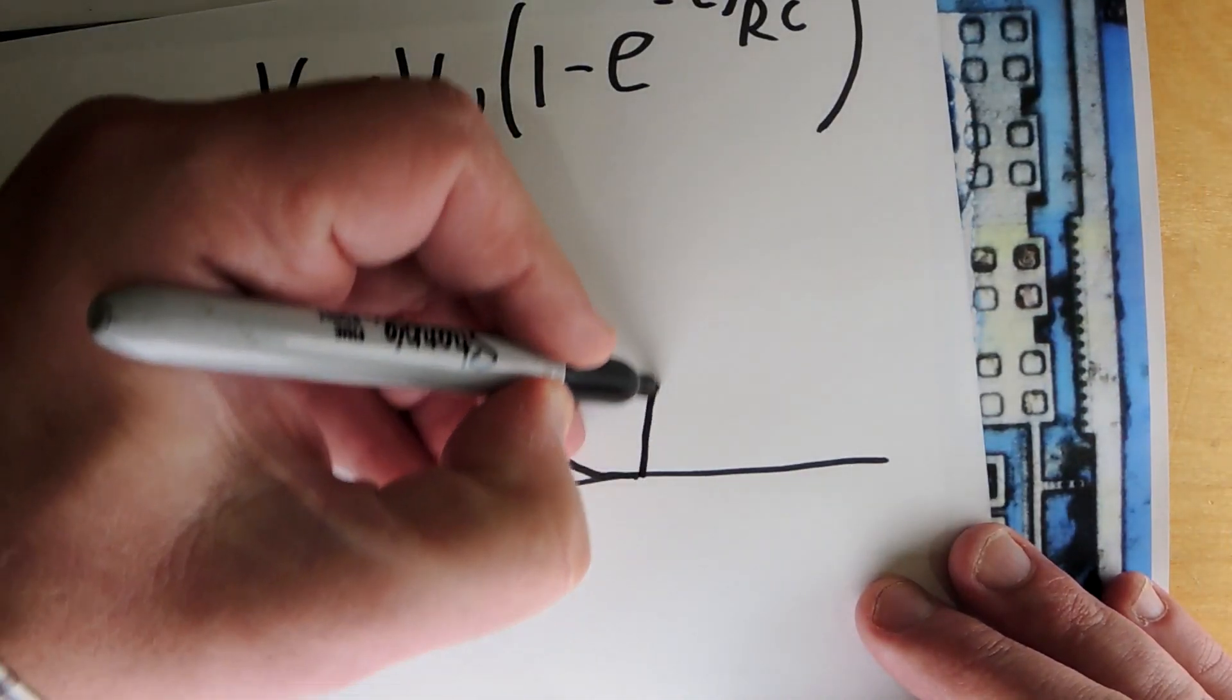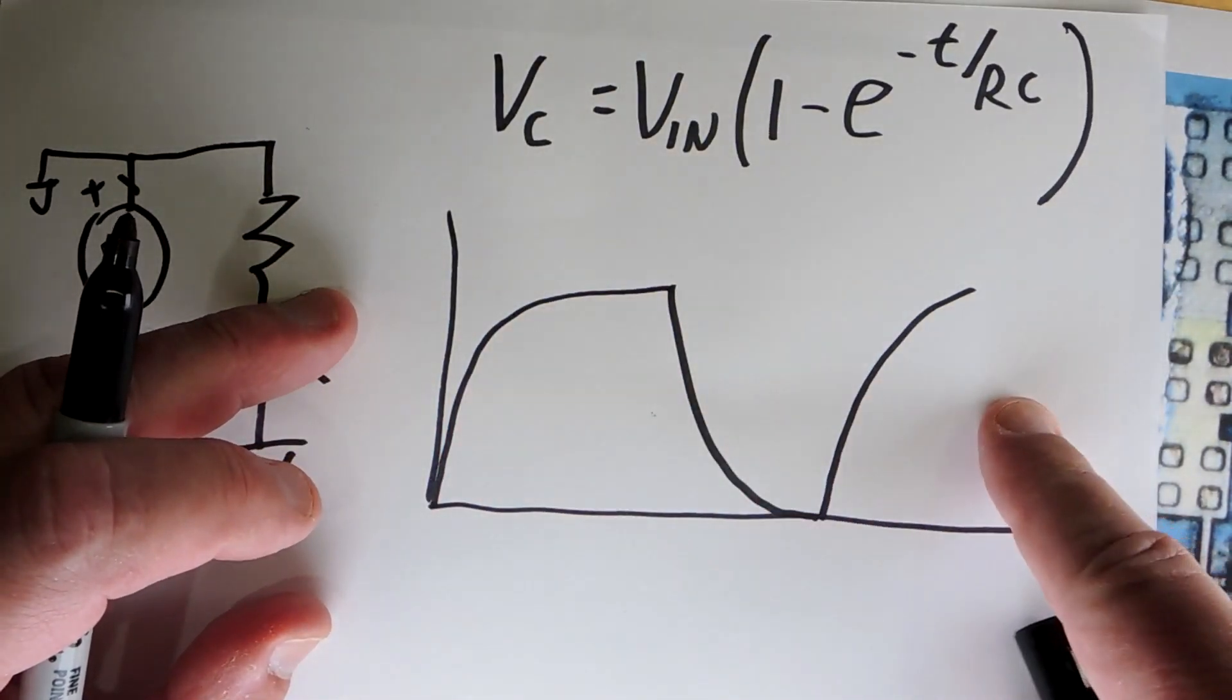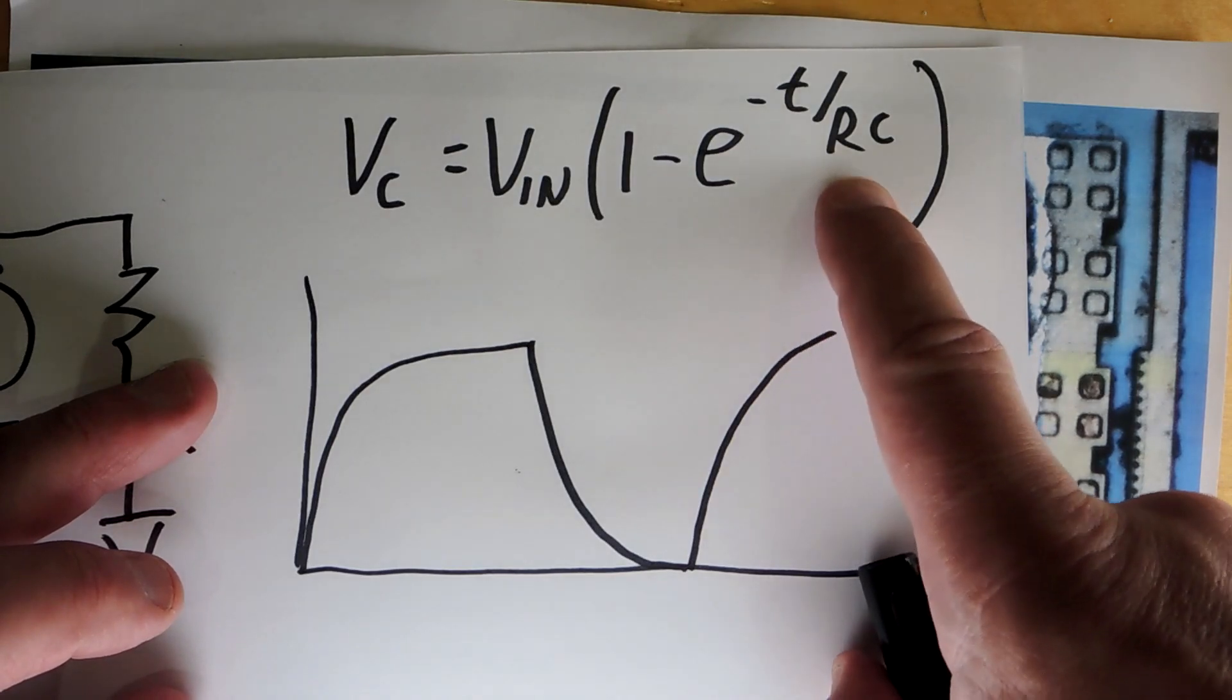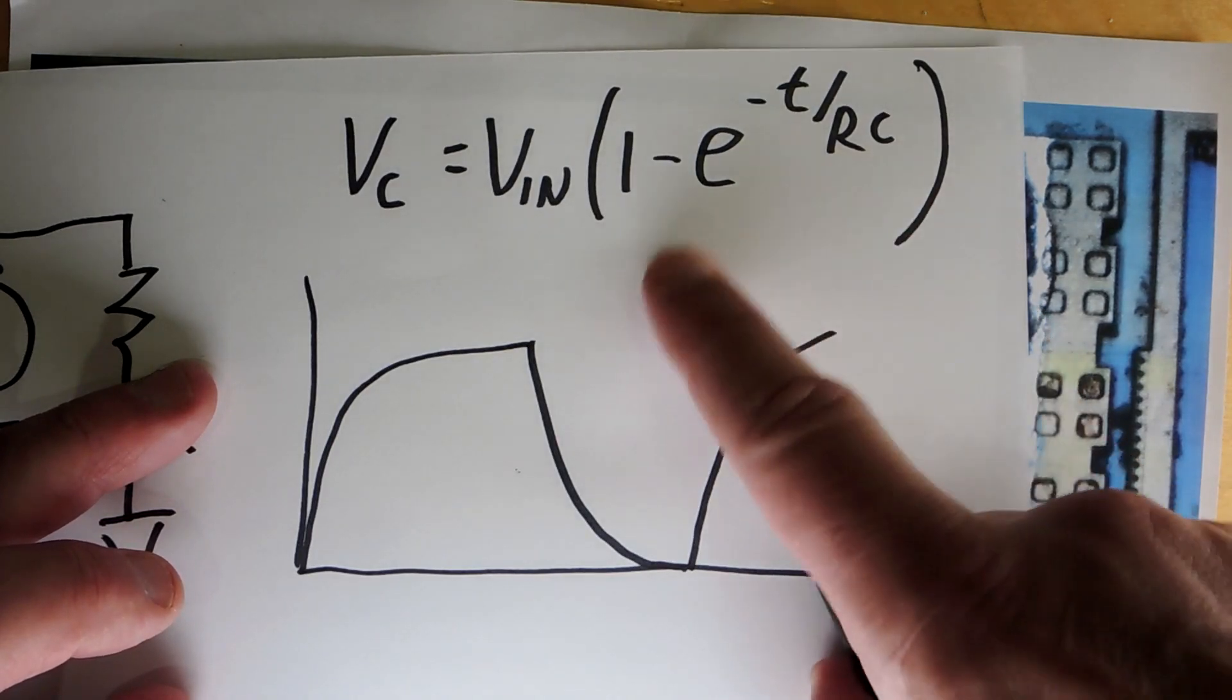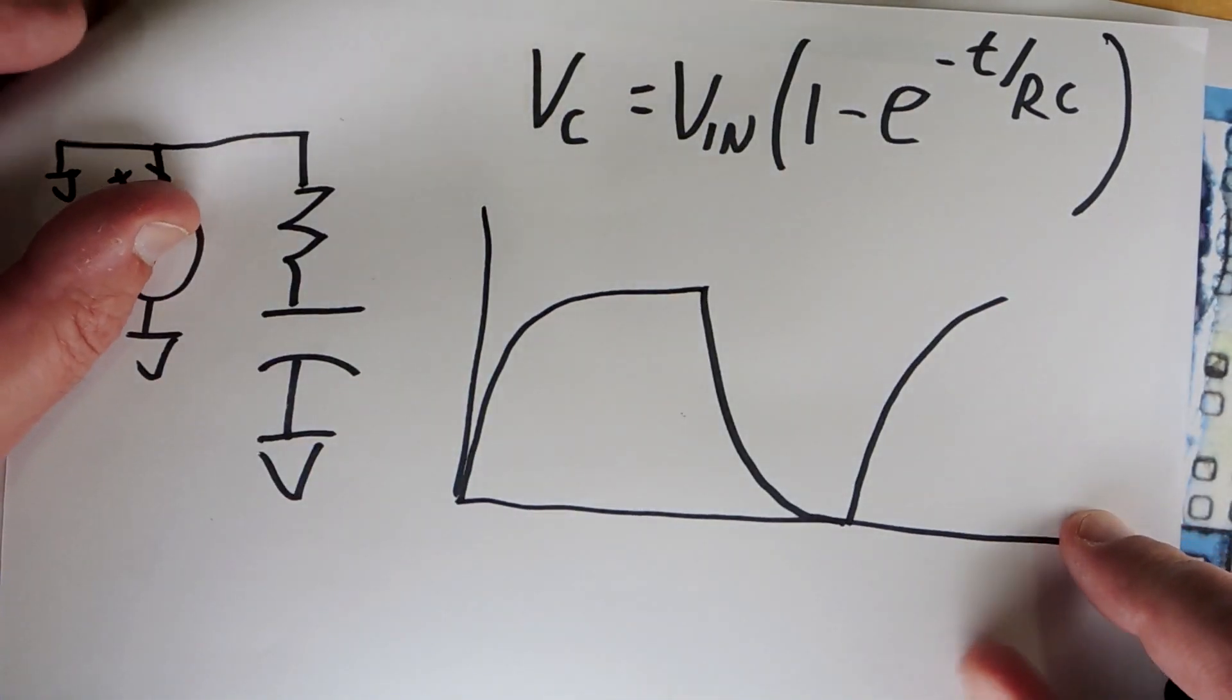And of course you repeat this, you'd end up with a very precise, a very repeatable array of pulses because the only thing that changes here, like R is constant, C is constant, the Vn is constant, only time. So basically you can create a reliable clock.